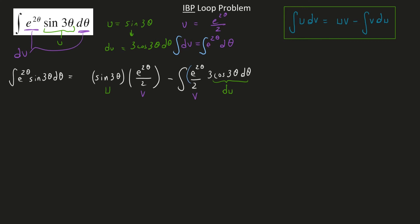And that's the thing. No matter which choice you made in the beginning for your u and your dv, it still would have ended up like this, a situation where you have to use integration by parts again.